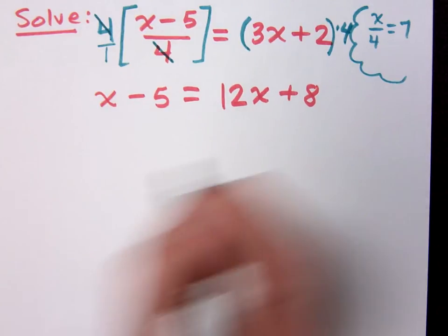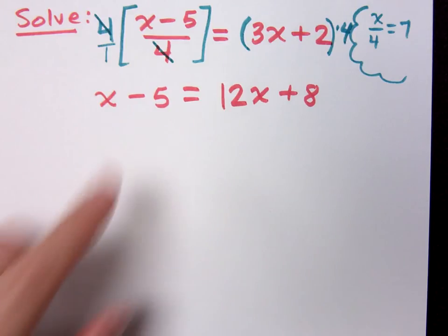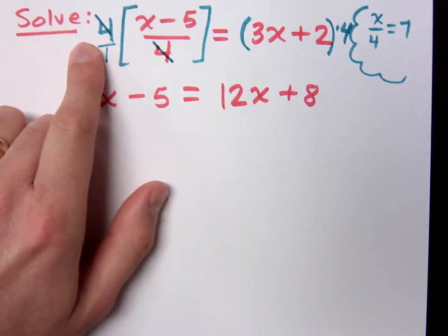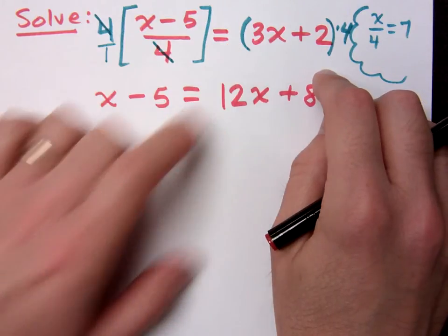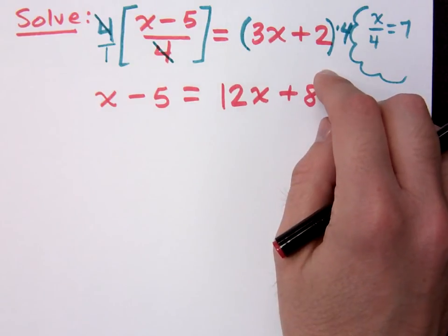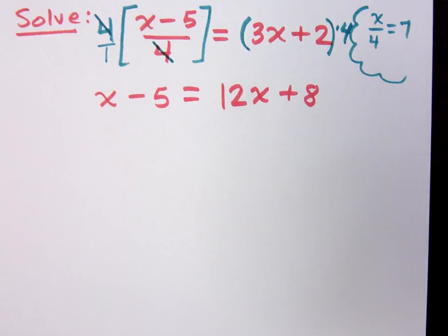What is the question? Why wouldn't it be 3x plus 2 times 4? What you do to one side, you do to the other side. So if I multiply the left side by 4, I have to multiply the whole right side by 4. It's not like you're moving a term from one side to the other. When it comes to multiplication, that's going to affect the whole group — you're multiplying the whole group by 4.